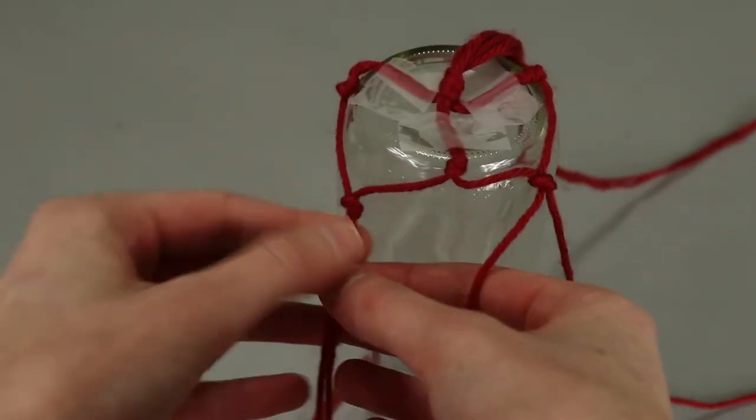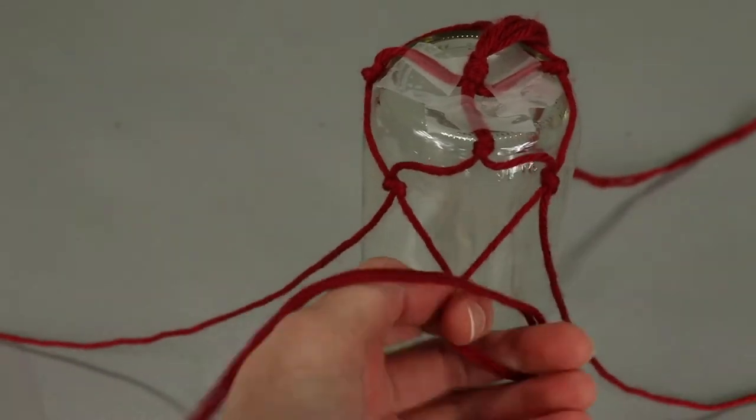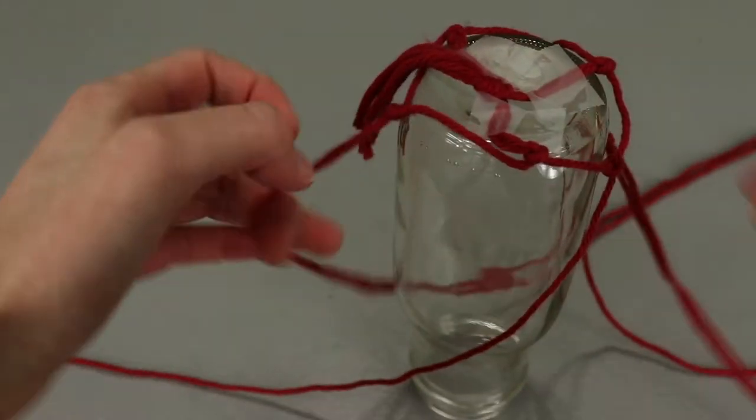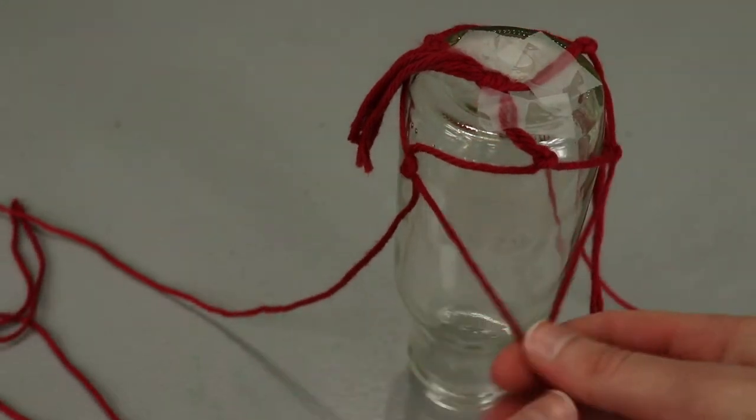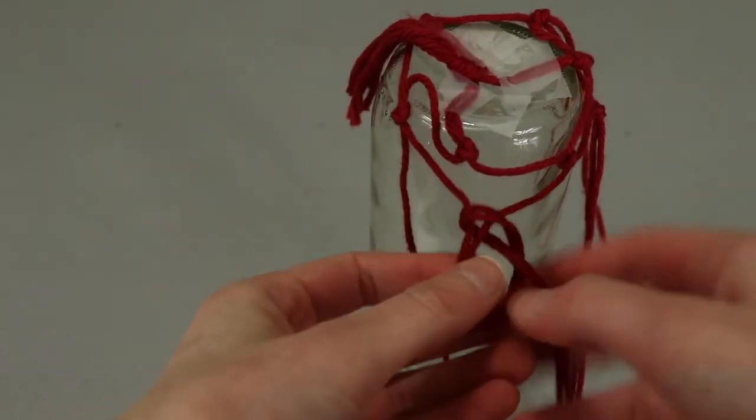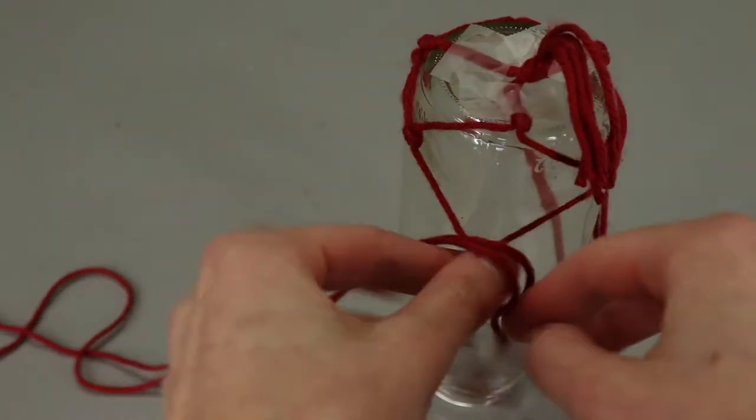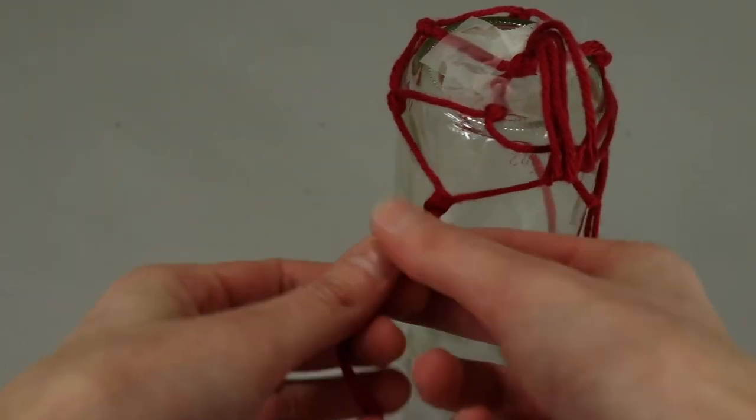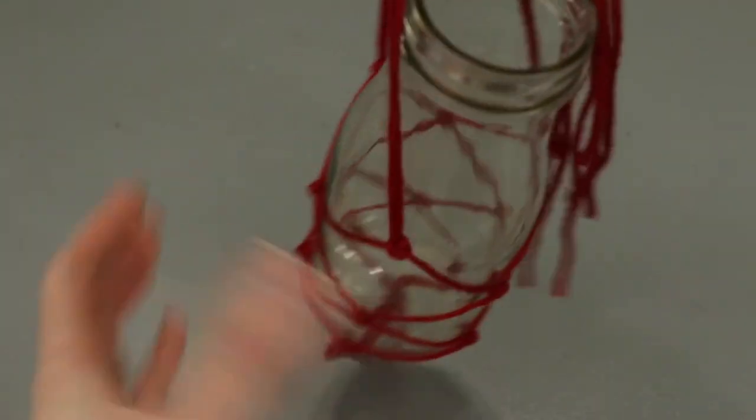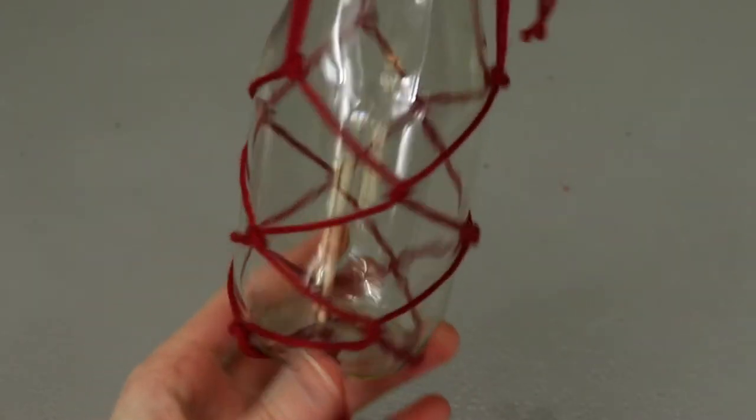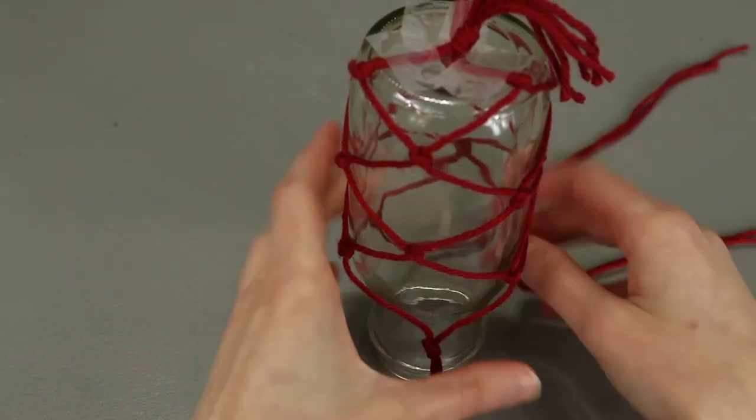At this point, we will keep repeating this process of tying rounds of three knots all the way down the length of the container. Each round, I will take the right strand from a left knot and the left strand from a right knot, hold them together as one strand and tie an overhand knot. Try to keep the knots evenly spaced. After five rounds of knots, I flipped my jar over to see how it was turning out. I decided to tie one more round of knots.